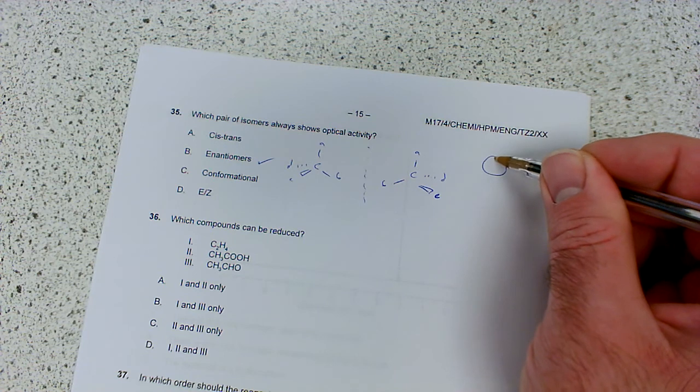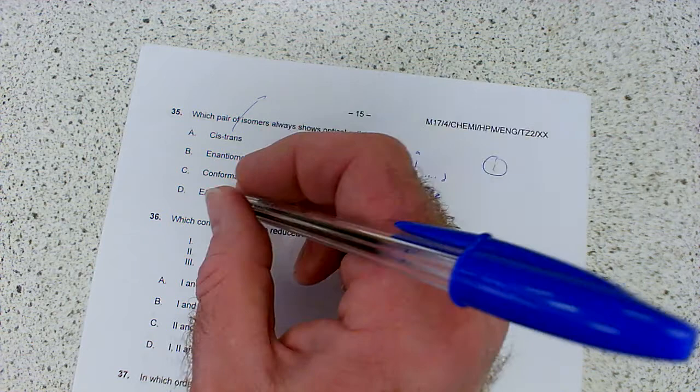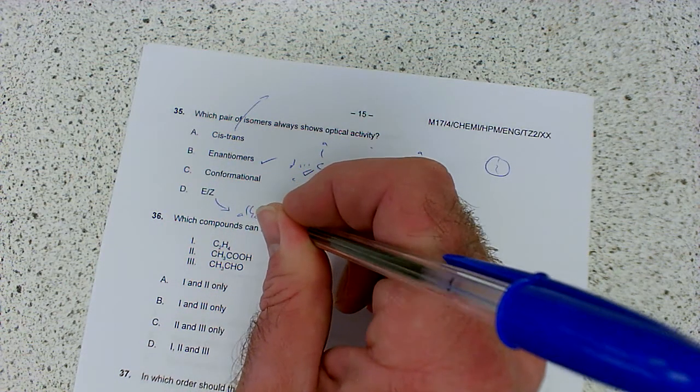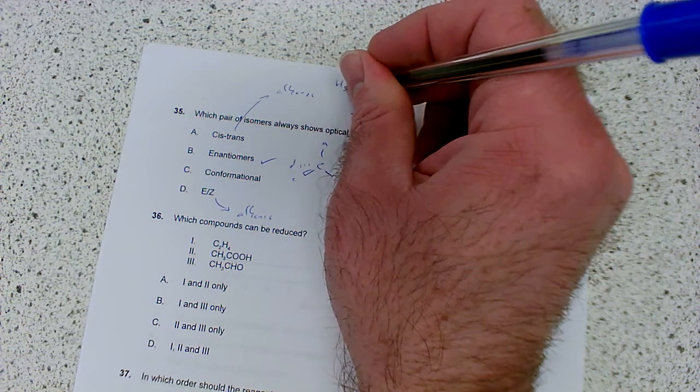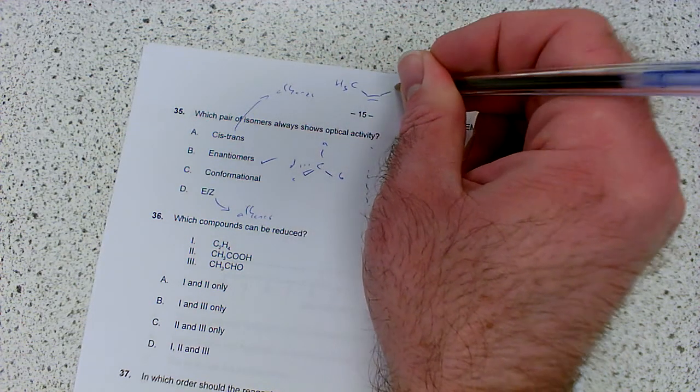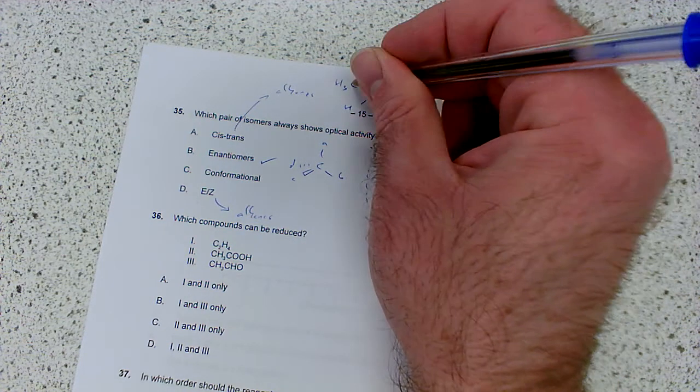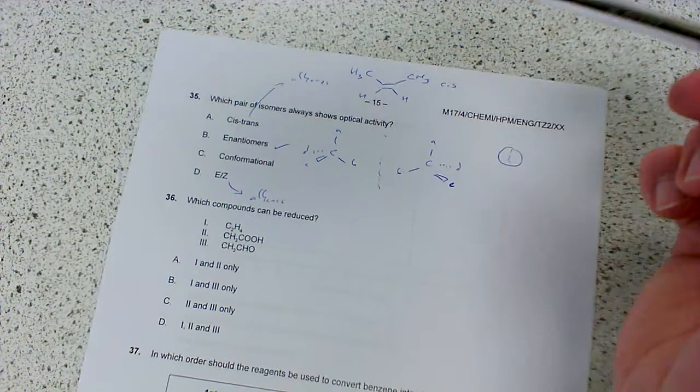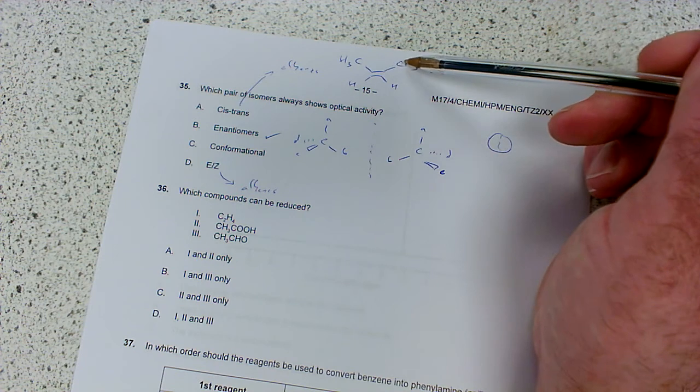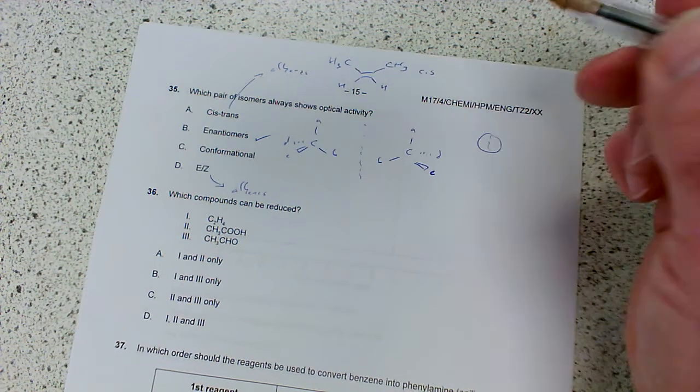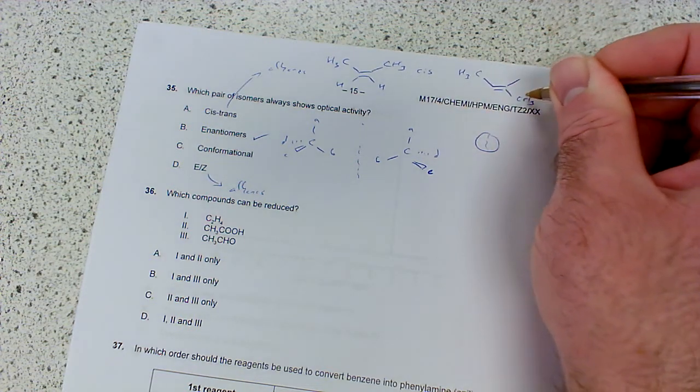Cis-trans and E-Z are both for alkenes with restricted rotation around a double bond. Cis-trans is used when it's symmetrical - cis is when the two methyl groups are on the same side, trans when they're on opposite sides. You get geometric isomers because of restricted rotation and each carbon has two different groups attached.